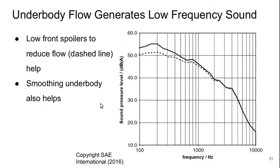One other area to consider is the underbody of the vehicle. The unevenness and shape of the underbody of a typical vehicle can generate low-frequency sound down to a couple hundred hertz. Adding a low front spoiler to reduce the amount of flow going under the vehicle helps reduce that noise, and smoothing the underbody also helps.